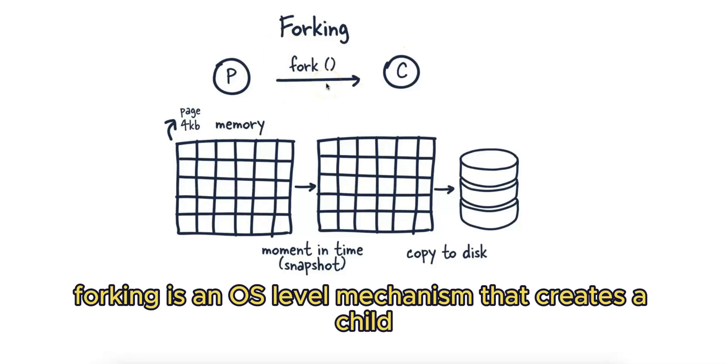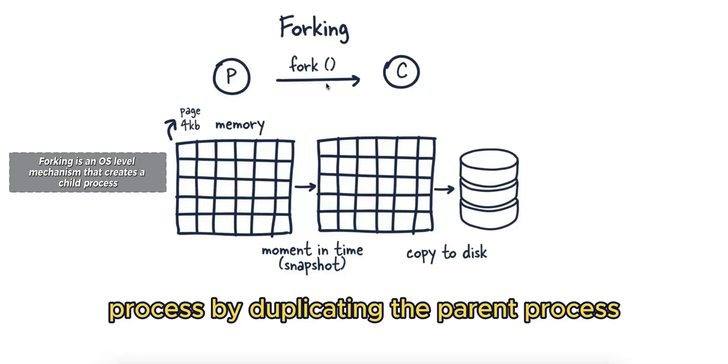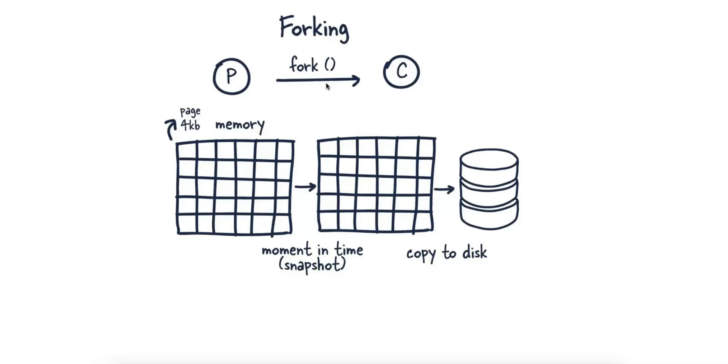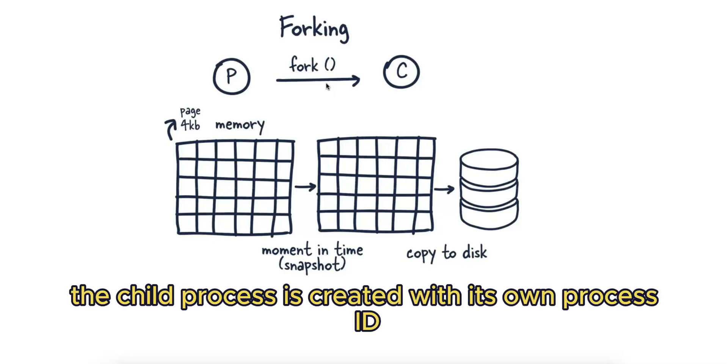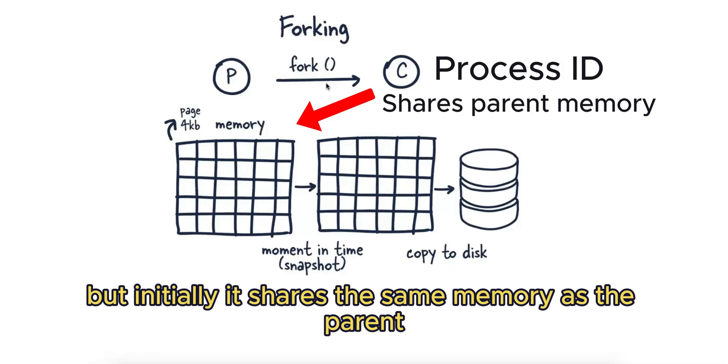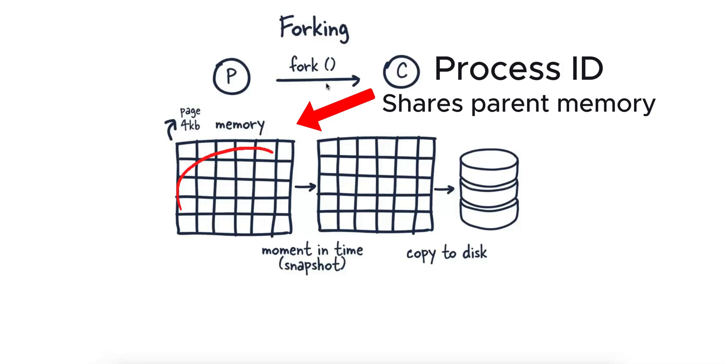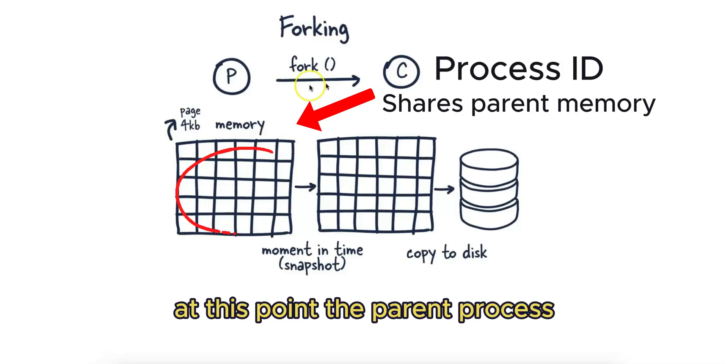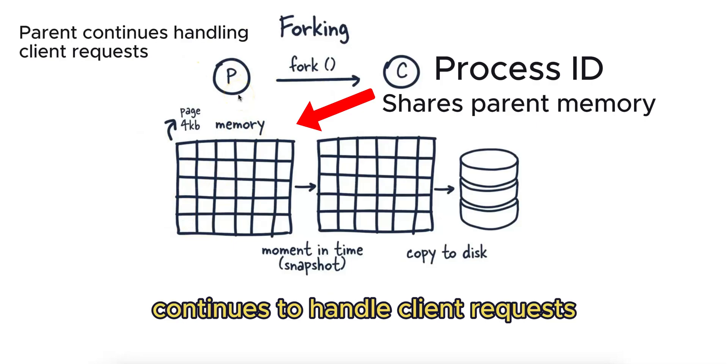In Redis, forking is an OS-level mechanism that creates a child process by duplicating the parent process. Redis uses this to perform background saving. When Redis forks, the child process is created with its own process ID, but initially it shares the same memory as the parent. At this point, the parent process continues to handle client requests.